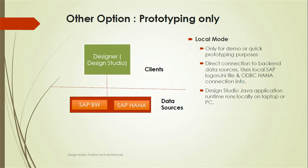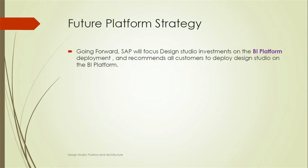The last option is local mode, which is for prototyping only. In this mode, you can connect to SAP BW or HANA as data sources and create applications for offline demo or quick prototype purposes. It uses a direct connection to backend data sources, uses a local SAP logon.ini file and ODBC HANA connection. The Design Studio Java application runtime runs locally on a laptop or PC.